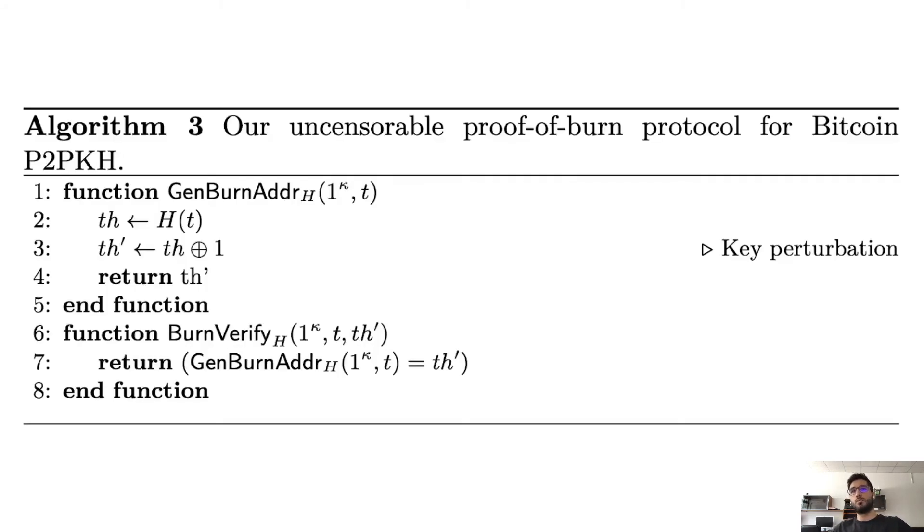This is the more formal definition of our scheme. As we said, GenBurnAddr works by taking this tag T, it hashes it, produces this TH, and then TH' is basically TH XOR-ing by the bit one, which basically flips the last bit. Then this is what we return. And then verification, because this is deterministic, we can just invoke GenBurnAddr again on the tag and verify that the purported address provided matches. Verification works as follows: We basically take this tag, and then we run GenBurnAddr ourselves. Because this is deterministic, it should give us the same TH' as provided.